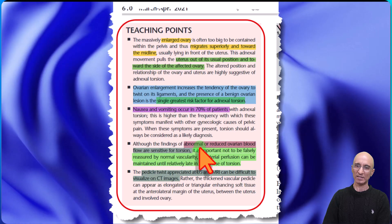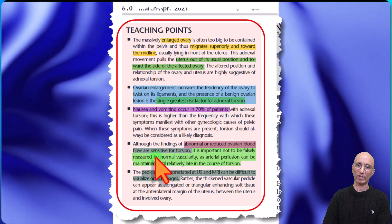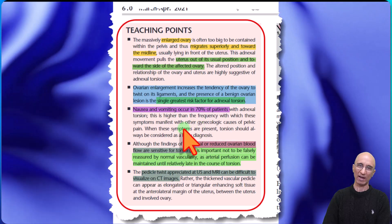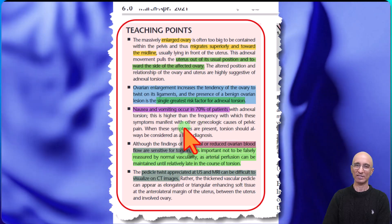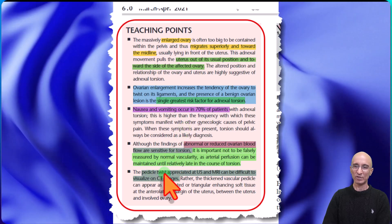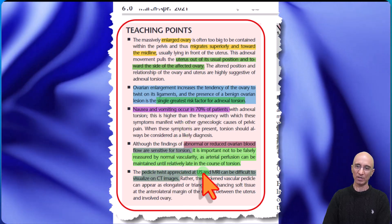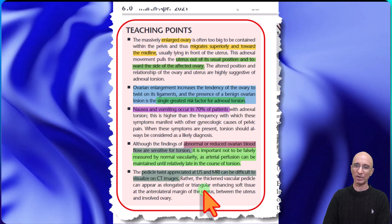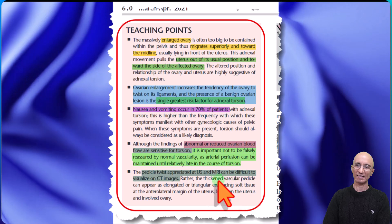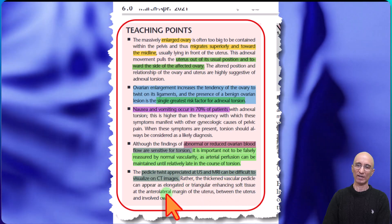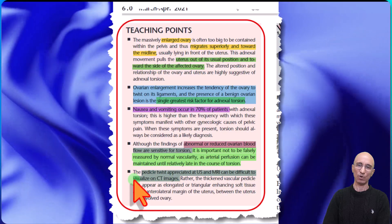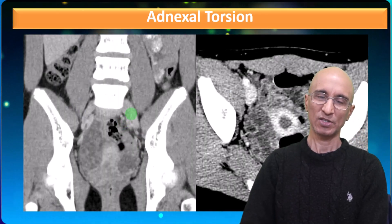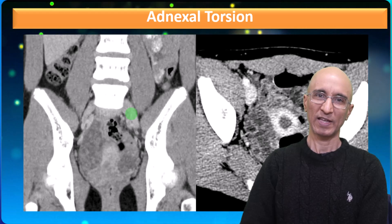As we saw in our patient, there can be abnormal or reduced ovarian flow. In our patient, the absence of diastolic flow was not prospectively identified, which is why the patient underwent CT examination. The twisting of the pedicle can be demonstrated on ultrasound or MRI examination but can be challenging to visualize on CT. On CT, we can see a triangular enhancing soft tissue along the anterolateral margin of the uterus between the uterus and the involved ovary. I hope you found this case of adnexal torsion interesting and informative. Thank you.